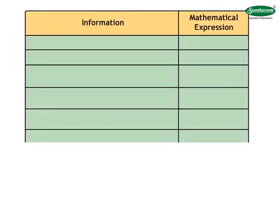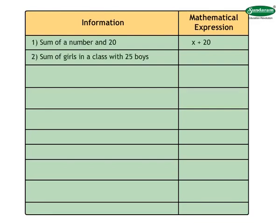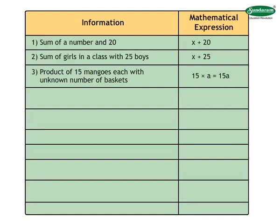Let us look at some more examples where alphabet can be used to denote the unknown number. Sum of a number and 20 can be expressed as x plus 20. Sum of girls in a class with 25 boys can be expressed as x plus 25. Product of 15 mangoes each with unknown number of baskets can be expressed as 15 into a equals to 15a.